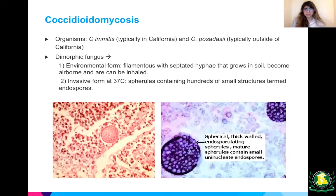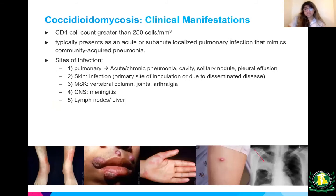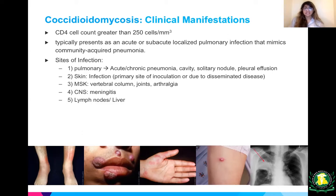Here are pictures of the spherical thick-walled endospore, sporulating spherules, and mature spherules containing small uninucleate endospores. Clinical manifestations: at CD4 count greater than 250, it typically presents as an acute or subacute localized pulmonary infection mimicking community-acquired pneumonia. Sites of infection include pulmonary, skin, musculoskeletal, CNS, lymph nodes, and liver. Pulmonary manifestations can include pneumonia, cavitary lesions, solitary nodules, or pleural effusions.